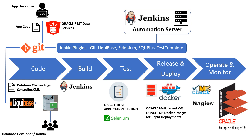Let's begin with the first phase of this pipeline, which is the code or source code management phase. In this phase, we are writing or generating source code and managing, tracking, and versioning changes made to our source code throughout the application development lifecycle. Source code could be application code written in any programming language like C, C++, Java, Python, etc.